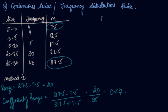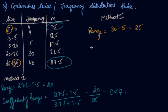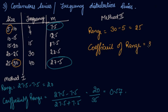Method 2: take the upper limit of the last class interval and the lower limit of the first class interval. The highest is 30 and the lowest is 5, so the range is 25. Note that the range will differ between methods, but both are valid. The coefficient of range using this method is 0.71.